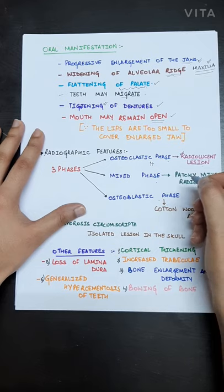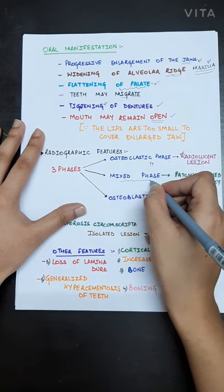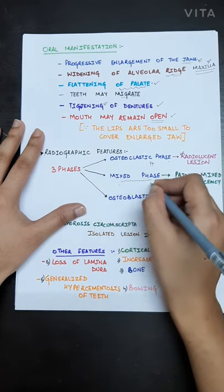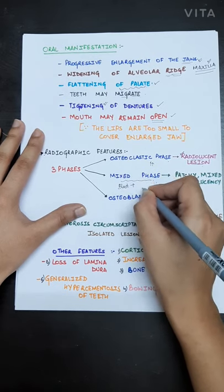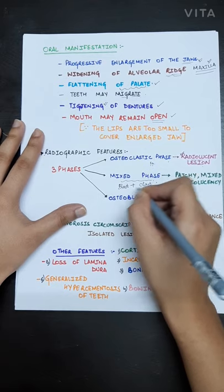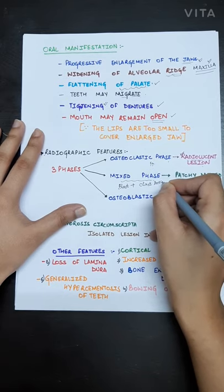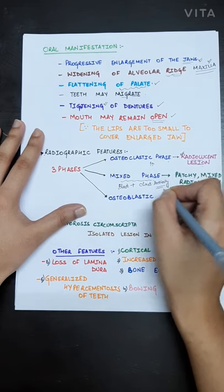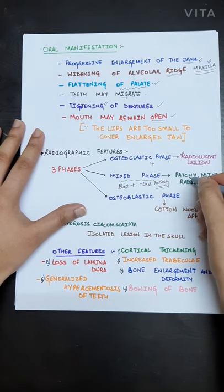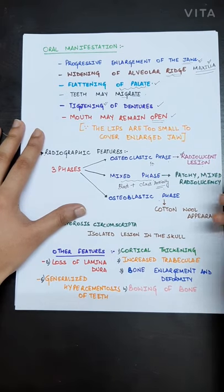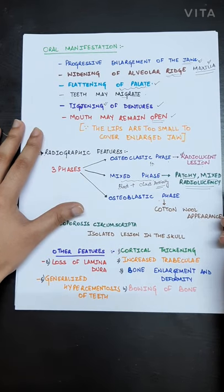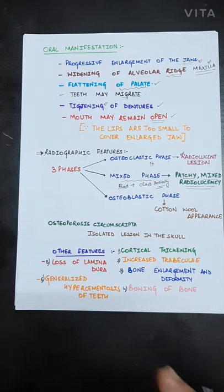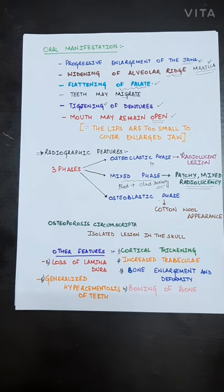Secondly, the mixed phase comes when there are both osteoblastic as well as osteoclastic activities. The radiographic appearance will be patchy or mixed radiolucency. There will be a mixture of radiolucent and radiopaque.